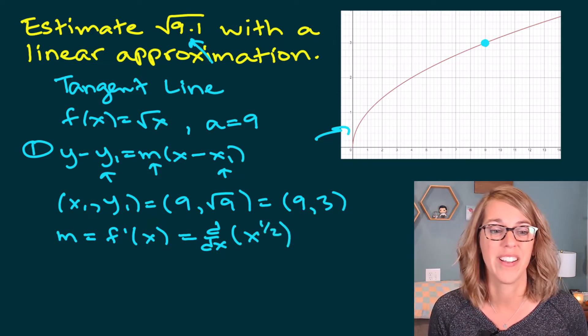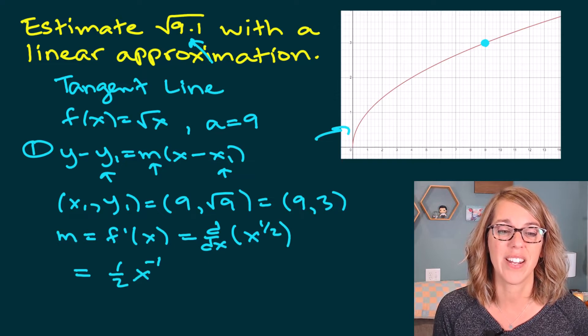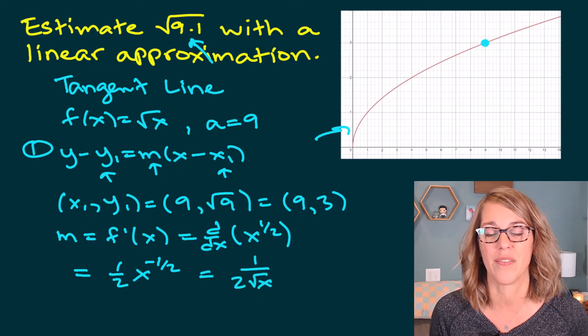Let's call that x to the 1/2 power. So my derivative turns out to be 1/2 x to the negative 1/2, or 1 over 2√x.